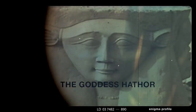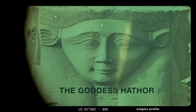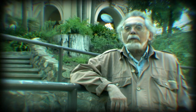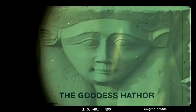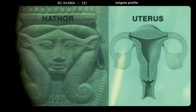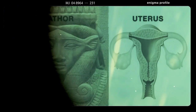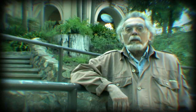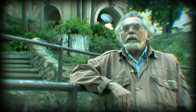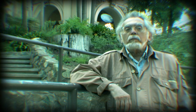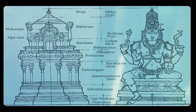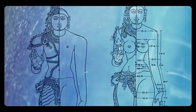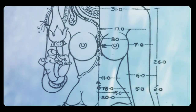The face of Hathor — and this is now accepted even by Egyptologists; in fact, it was an Egyptologist who discovered it, A.A. Barb back in the 1950s — represents a uterus. Hathor is, of course, the mother of all; her name means the mother of Horus. So we find wherever we look, and I'm sure that the Hindus in Vedic India also built according to these same understanding and principles.